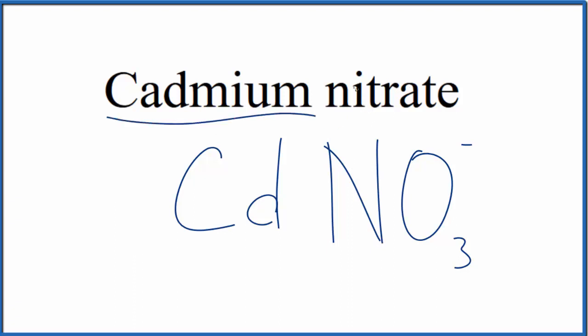Because cadmium is a metal, it's a transition metal, and the nitrate ion is a group of nonmetals, we need to think about charge when we write the formula for cadmium nitrate.